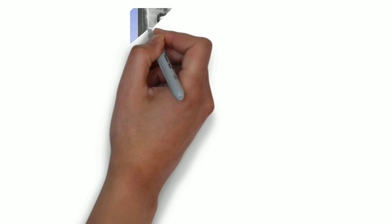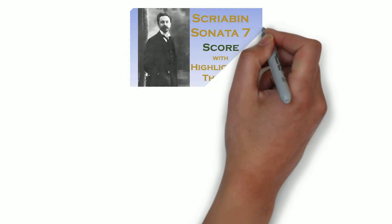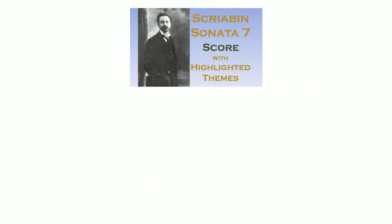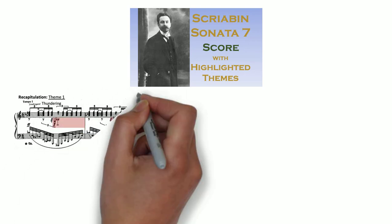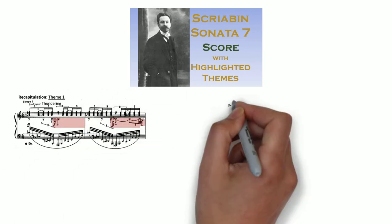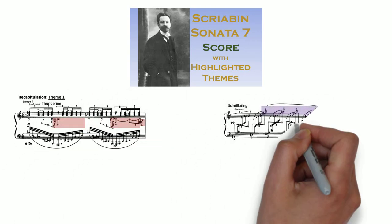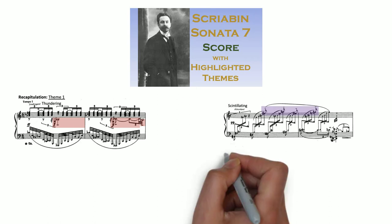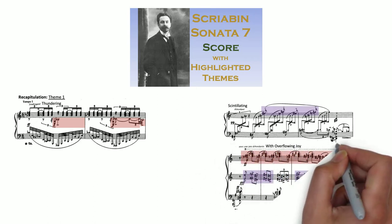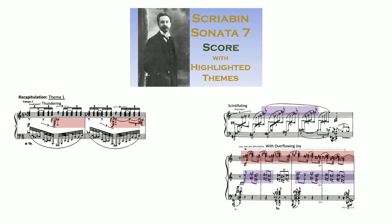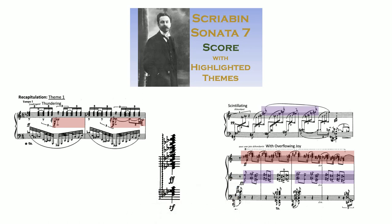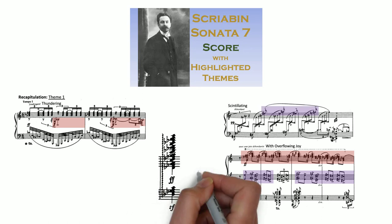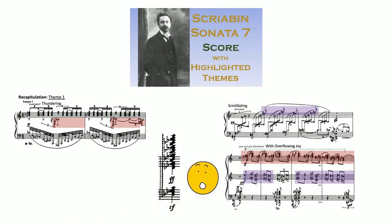Sonata 7 begins with peak intensity of the primary motif. With so much intensity throughout the Sonata, Scriabin has to introduce a new soft theme in the development section to create an even more intense climax section by the end. Part of why Scriabin fans love this Sonata so much is because of how over the top this final climax is.